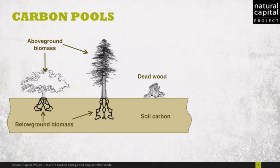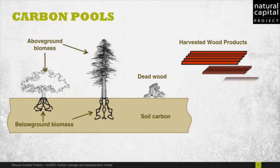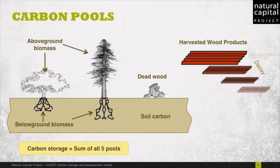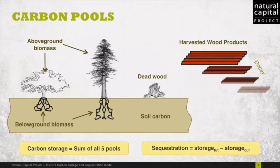Optionally, the model can consider a fifth carbon pool: harvested wood products. This is when wood is harvested and turned into houses, firewood, and other types of products that also decay and release their carbon over time. The total amount of carbon calculated by the model is the sum of all five of these carbon pools, and sequestration is simply the change in storage between future and current landscapes.